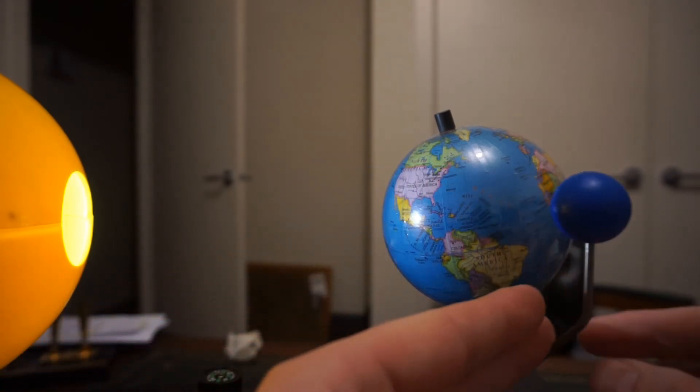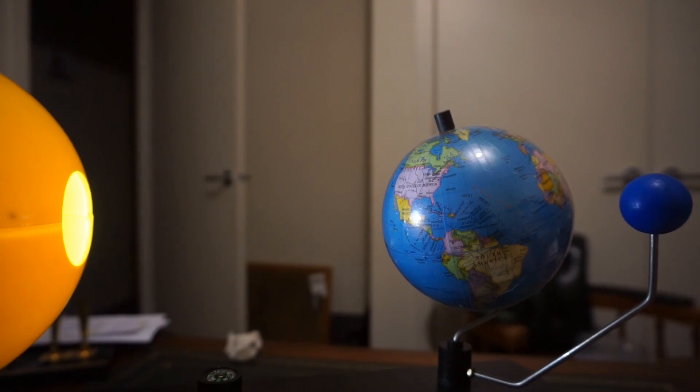You can't really see it with this model, but when the Moon is behind the Earth, enough light from the Sun makes its way around the Earth to light up this whole side of the Moon that faces the Earth. In that case, we call it a full Moon.